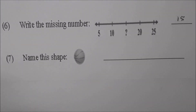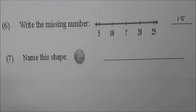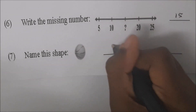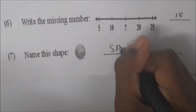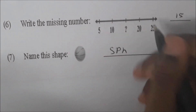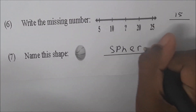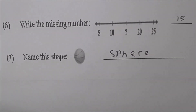Go to number seven. Name this shape. What is that shape? A sphere. That's a basketball shape. Can you spell the word sphere? S-P-H-E-R-E. Very good.